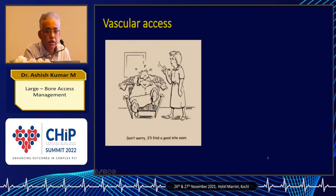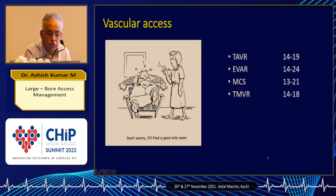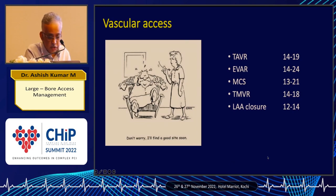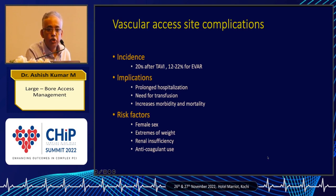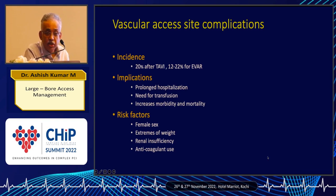Despite advances in technology and downsizing of the delivery systems, for some of these procedures we still require access as large as 24 French for thoracic aortic stent grafts. Complications associated with these large bore accesses lead to prolonged hospitalization, sometimes transfusion requirement, and increased procedural morbidity and mortality. Such complications occur in up to one fifth of patients.